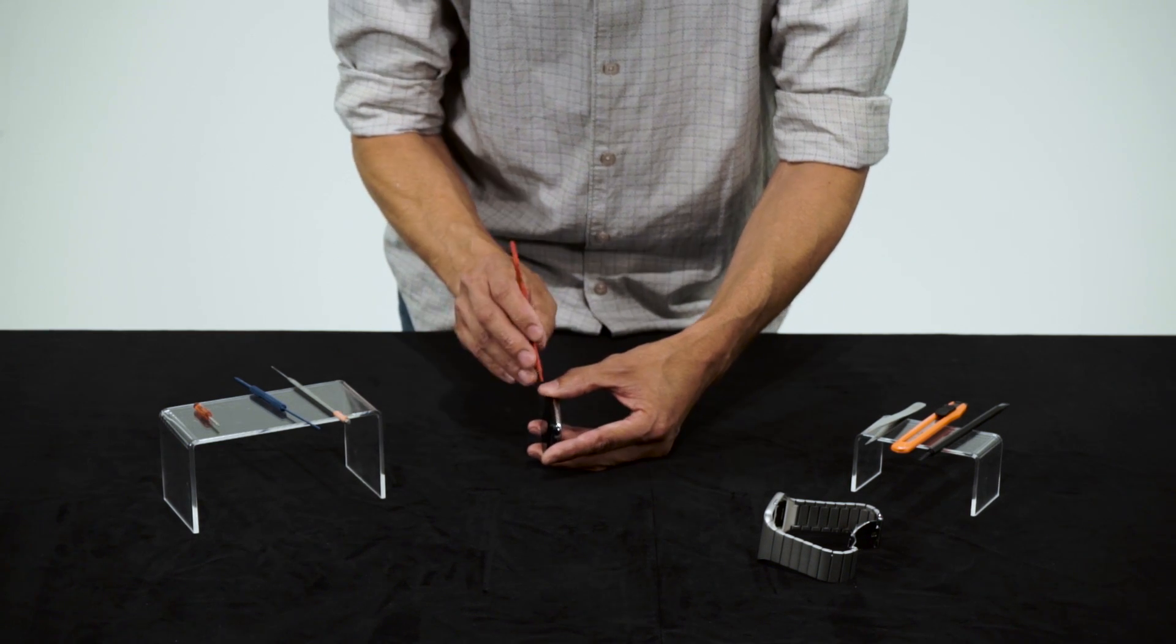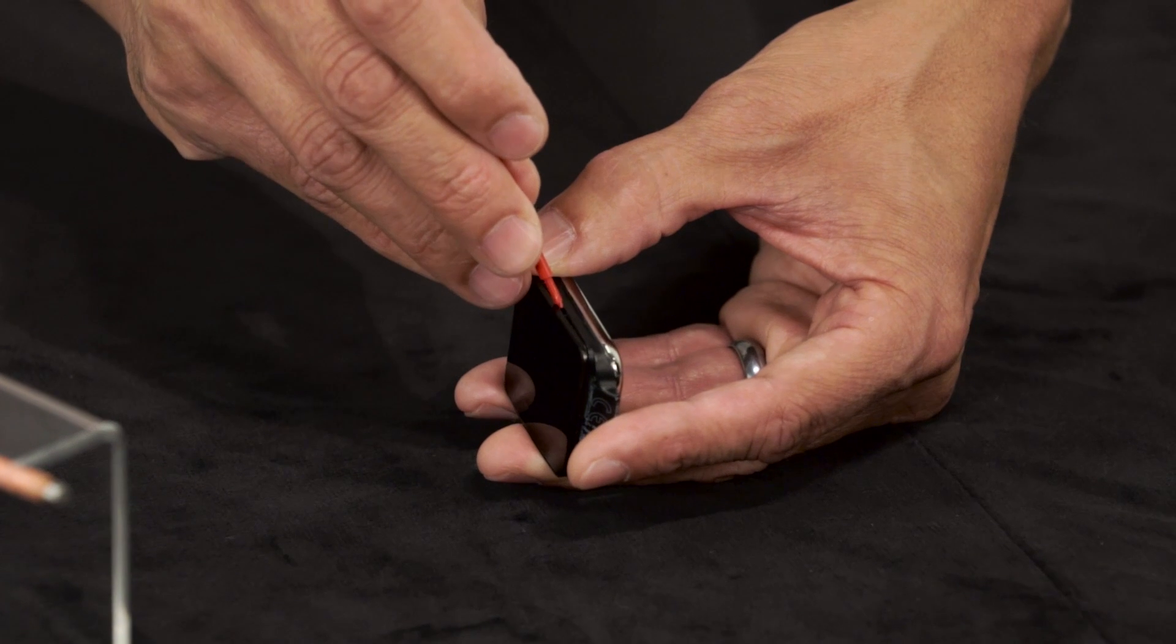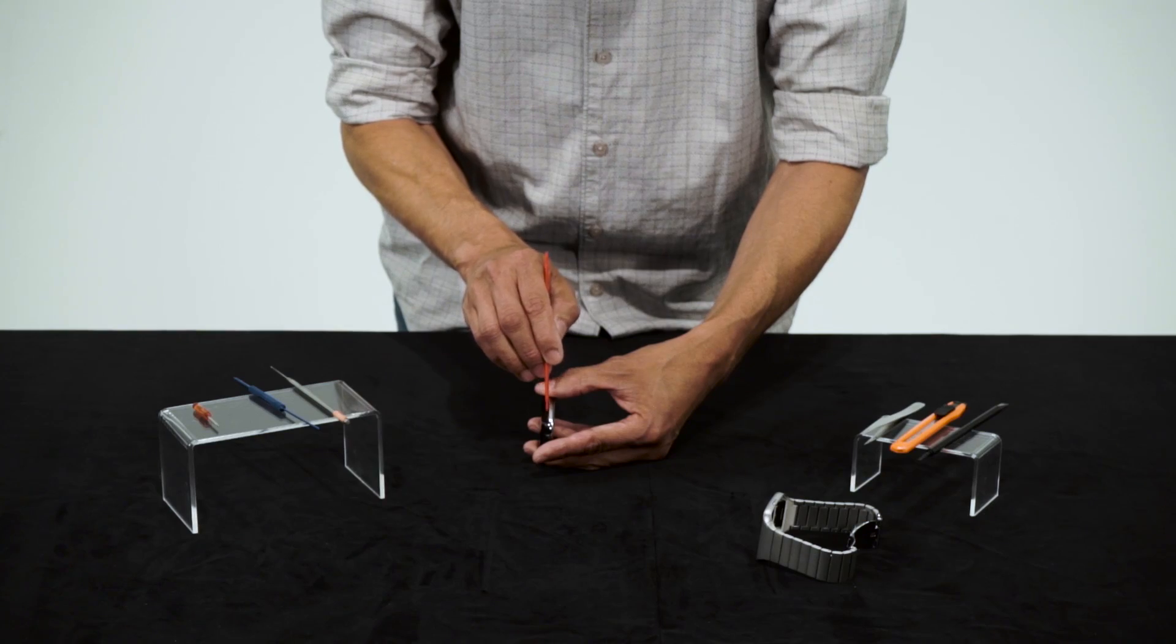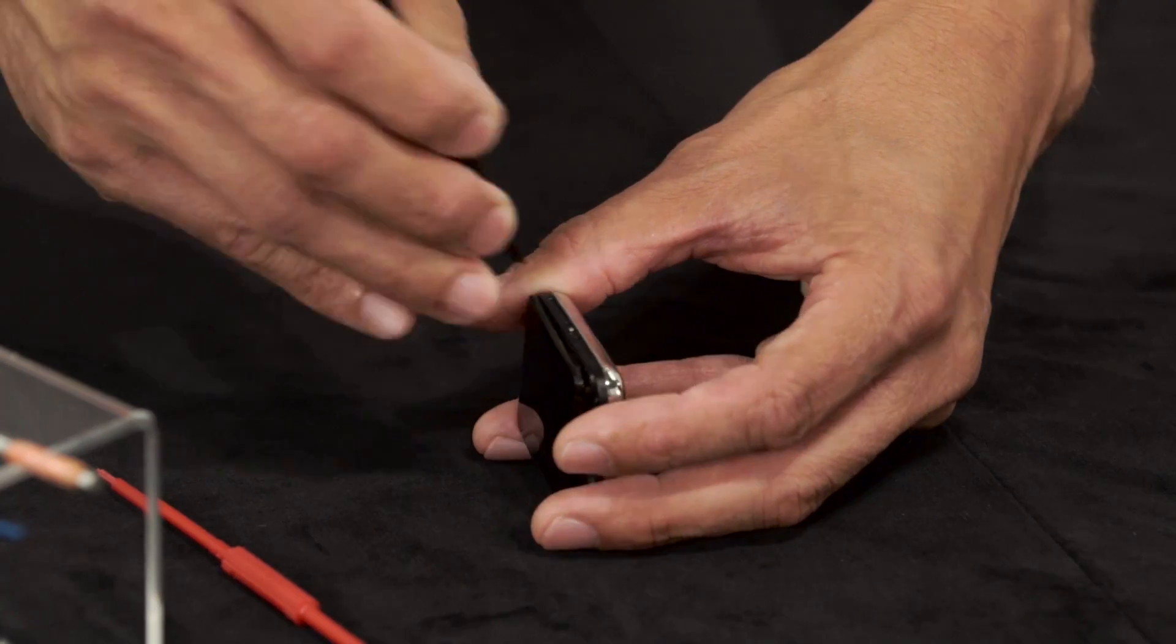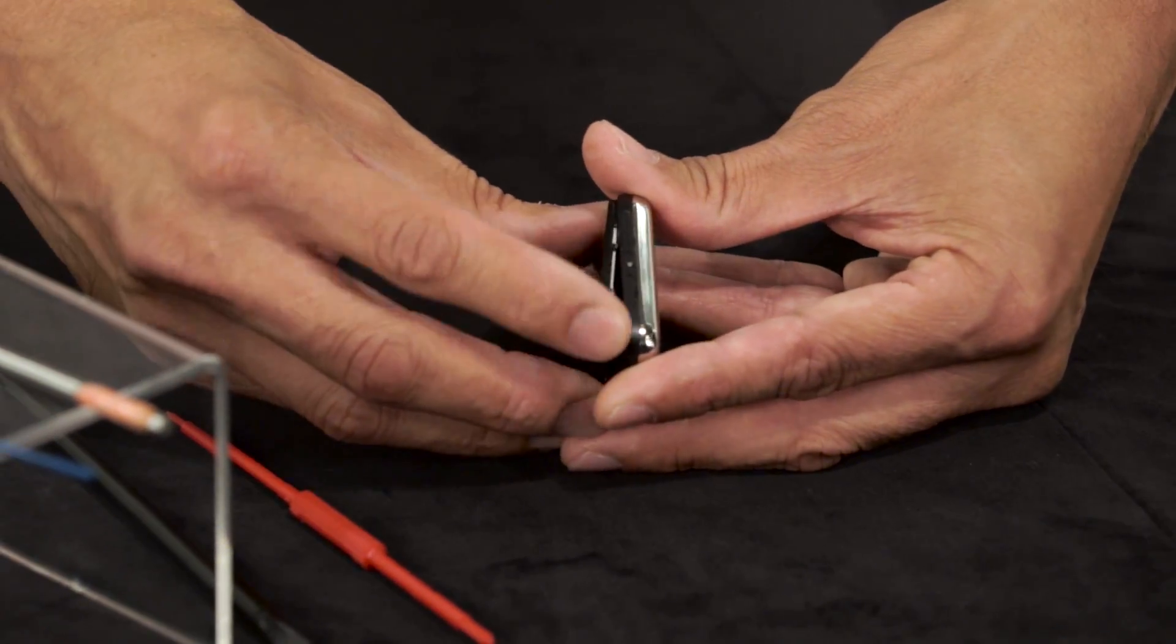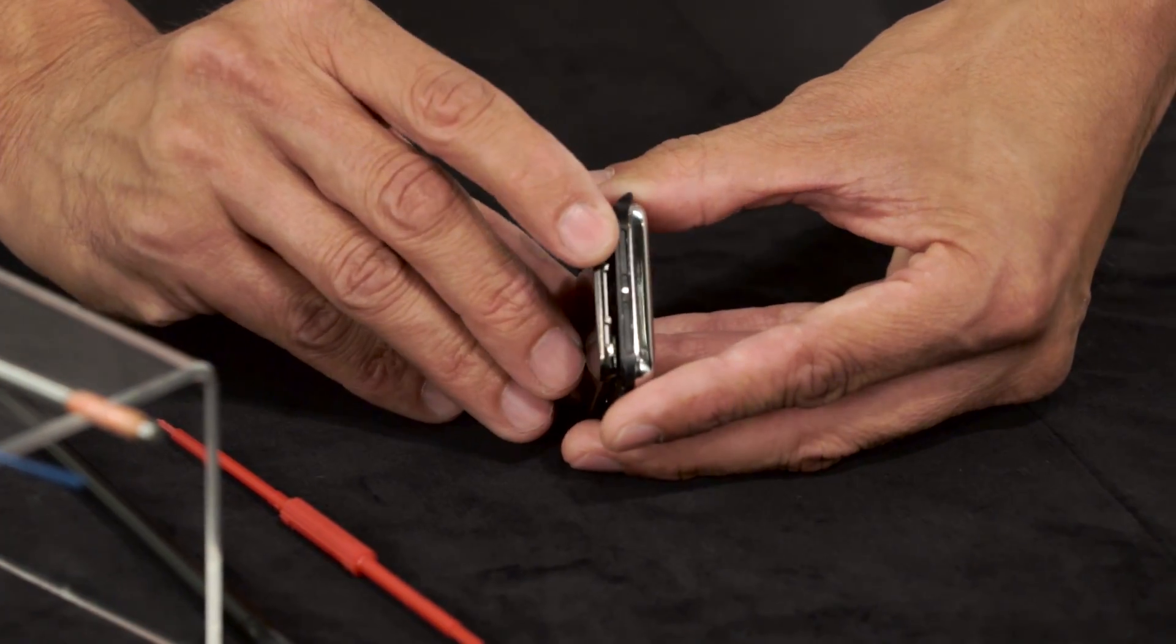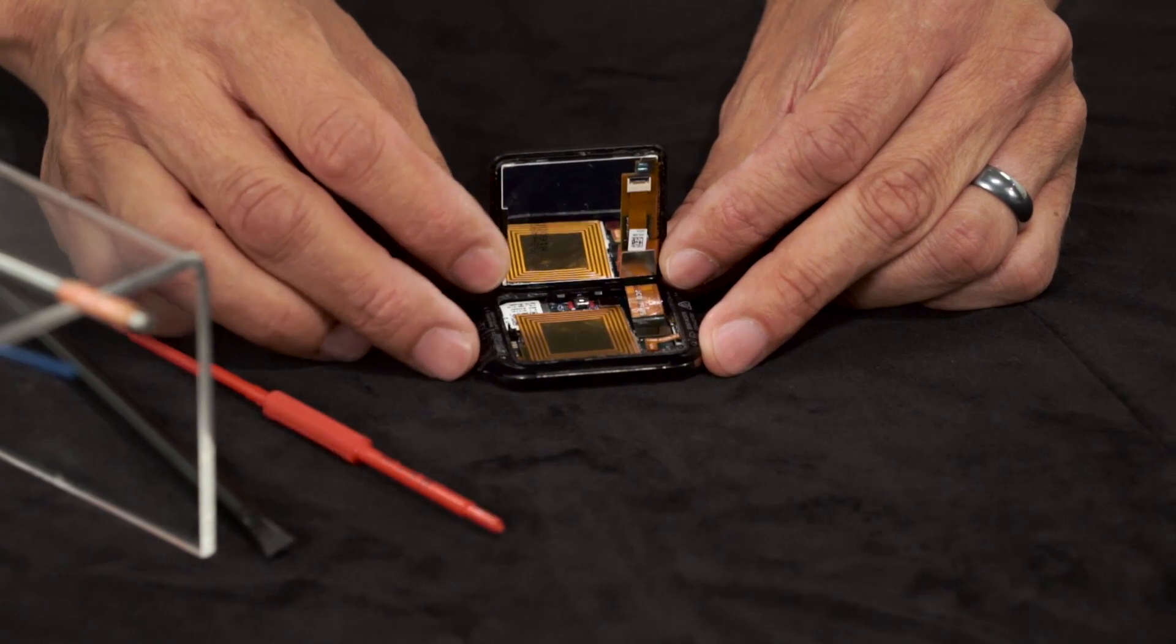We'll start by removing the LCD screen from the watch module. Between the metal backing and the screen is a plastic bracket that holds the two pieces together. Between the LCD screen and the plastic bracket is adhesive, which we gently remove by prying it up on all four sides. The adhesive is really strong to keep any dust from getting underneath the screen. And this is what's under the hood. Looks simple, right?